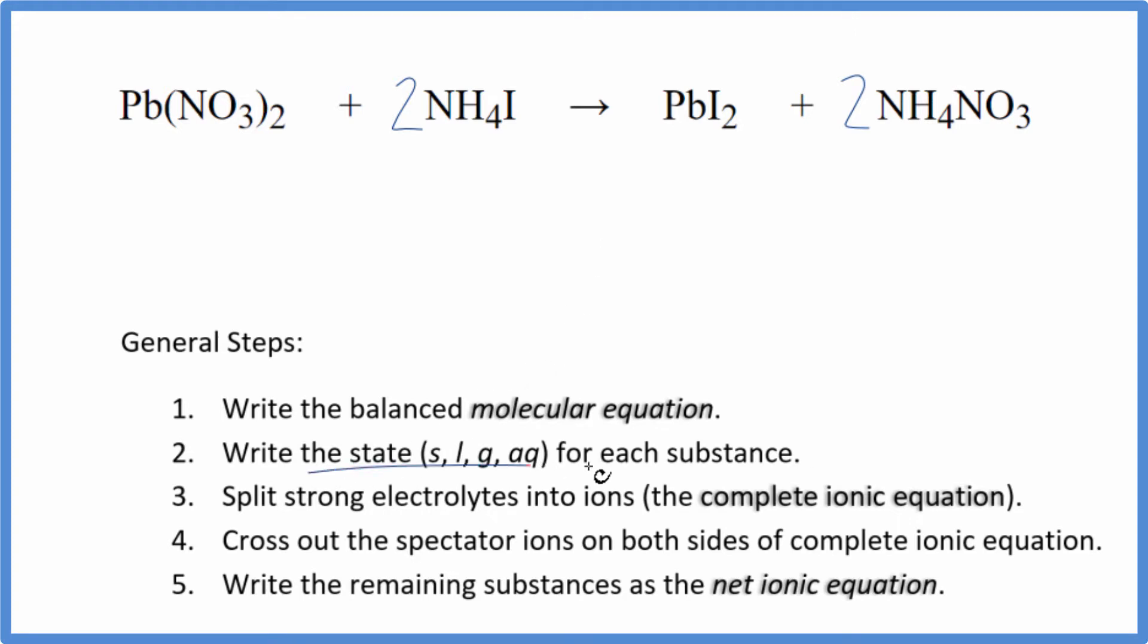Now we need to write the state for each substance. Nitrates are very soluble, if you know your solubility rules. So that's going to be aqueous. It's going to dissolve and dissociate into its ions. Ammonium compounds, this NH4 here, ammonium compounds are also very soluble, aqueous. You have another ammonium nitrate. So an ammonium and a nitrate, that will be soluble.